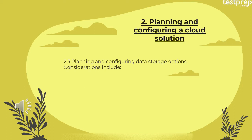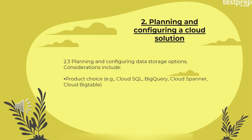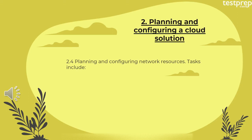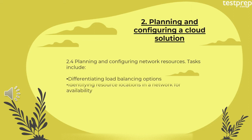Also using preemptible VMs and custom machine types as appropriate. Number three: planning and configuring data storage options — considerations include product choice such as Cloud SQL, BigQuery, Cloud Spanner, Cloud Bigtable; and choosing storage options such as Standard, Nearline, Coldline, and Archive. Number four: planning and configuring network resources — tasks include differentiating load balancing options, identifying resource locations in a network for availability, and configuring Cloud DNS.